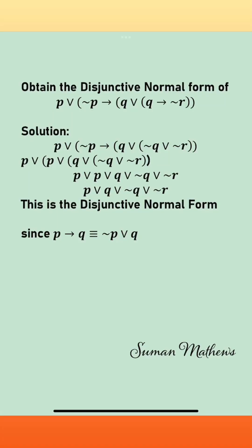Here's a question on logic: obtain the disjunctive normal form of this equation. Disjunctive normal form means you write it in terms of disjunctions and elementary products. We start with the formula that p implies q is the same as negation p disjunction q.